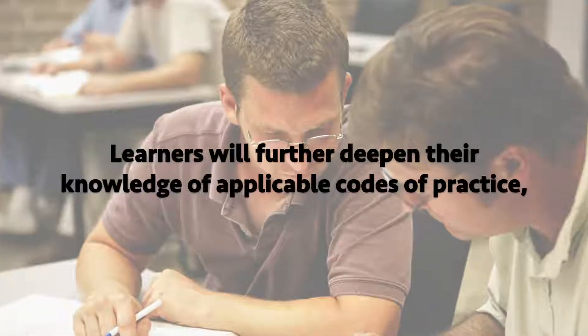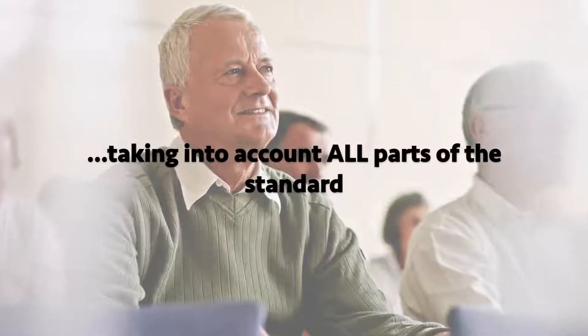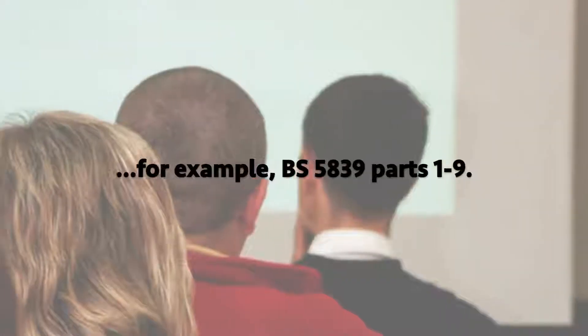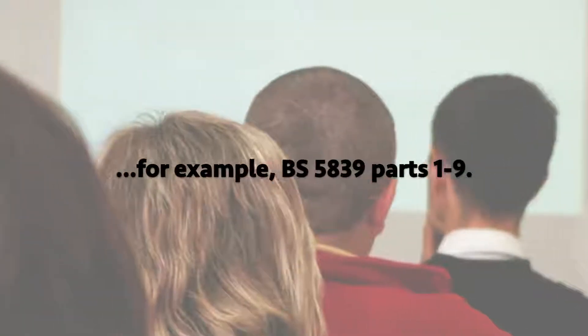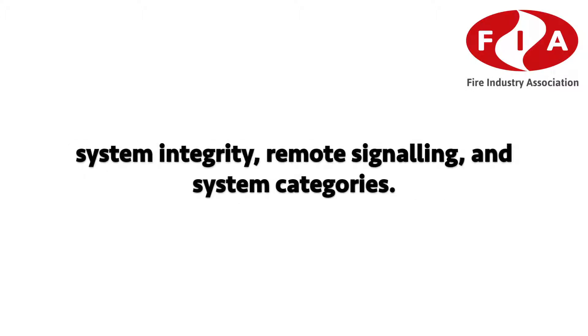Next is BS 5839, IS 3218 and BS 6266. Learners will further deepen their knowledge of applicable codes of practice, taking into account all parts of the standard — for example, BS 5839 parts 1 through to 9. You'll discover what the standards say about detection and alarm design, system integrity, remote signalling and system categories.